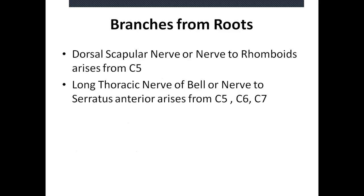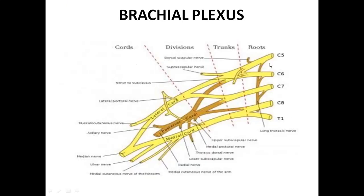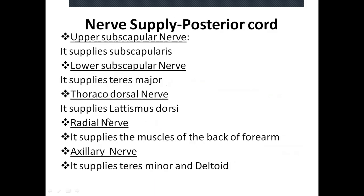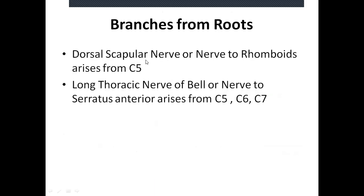Let us see the branches from the roots. Certain branches arise directly from the root itself. The branch arising from C5 is the dorsal scapular nerve, also known as the nerve to rhomboids. The branch arising from roots C5, C6 and C7 is the long thoracic nerve of Bell, also known as the nerve to serratus anterior. These two branches arise directly from the roots.